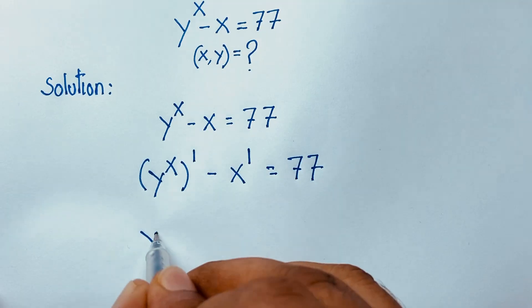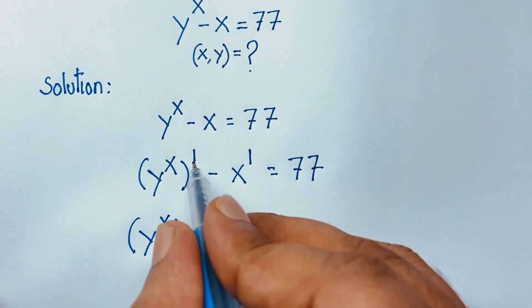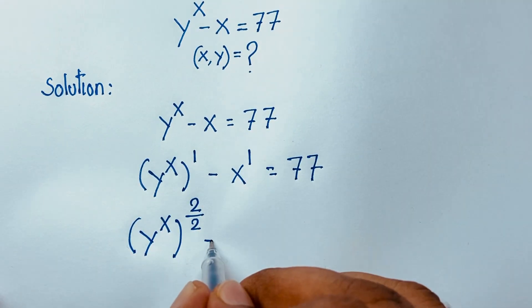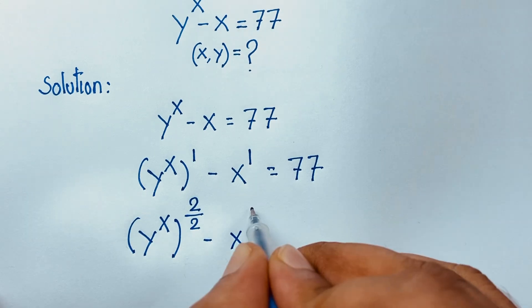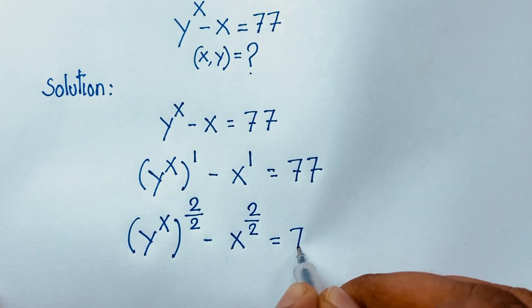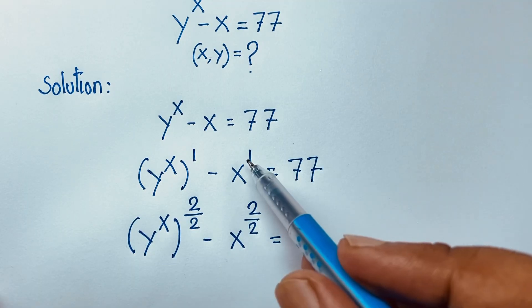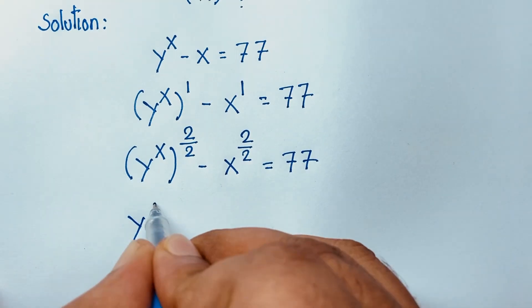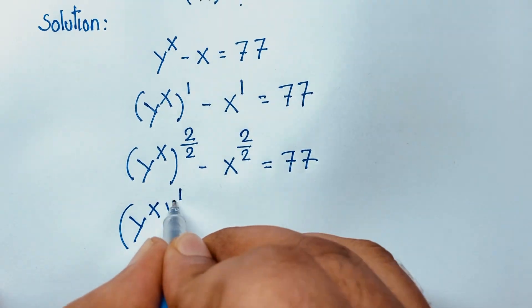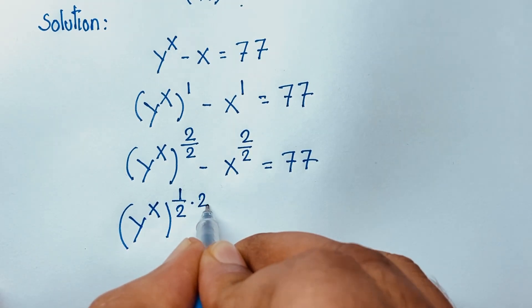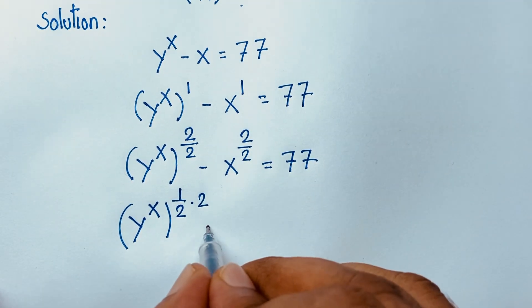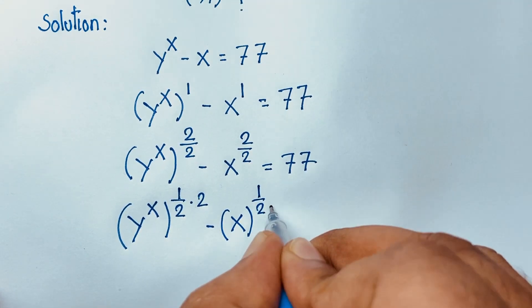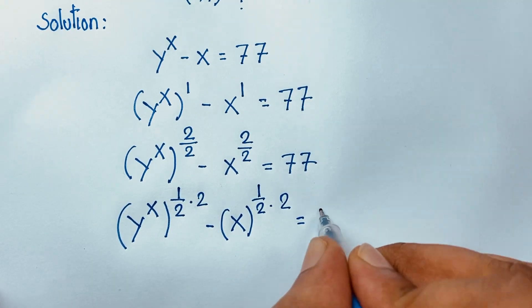I can see here y to the power x in bracket, and the power is 1. So this 1 will be 2 divide 2, and 2 divide 2 equals 1. Then here x to the power 2 divide 2 is equal to 77. We know that 2 divide 2 is also 1. I can see it will be y to the power x in bracket, power is 1 over 2 times 2 — this half times 2 equals 2 over 2 — minus x to the power 1 over 2 times 2, is equal to 77.